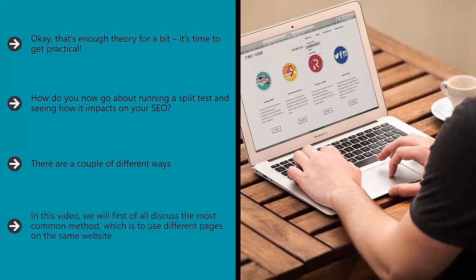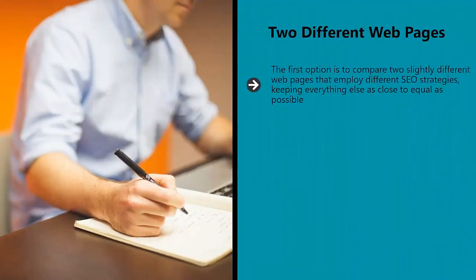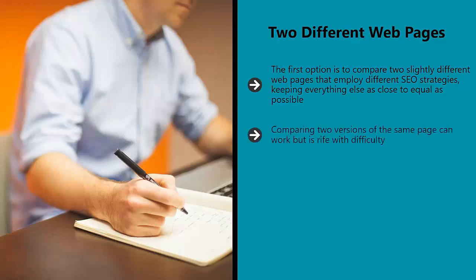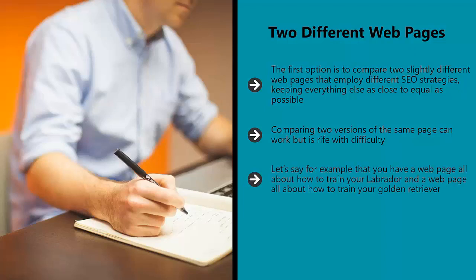In this video, we will first of all discuss the most common method, which is to use different pages on the same website. The first option is to compare two slightly different web pages that employ different SEO strategies, keeping everything else as close to equal as possible. More accurately, you will compare two groups of different pages. For example, you might have a web page all about how to train your Labrador and a web page all about how to train your Golden Retriever. These pages are almost identical in subject matter, and you're going to go out of your way to ensure they are extremely similar in all other ways that count too.